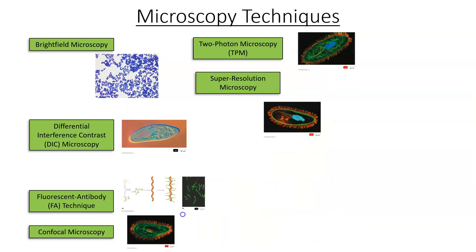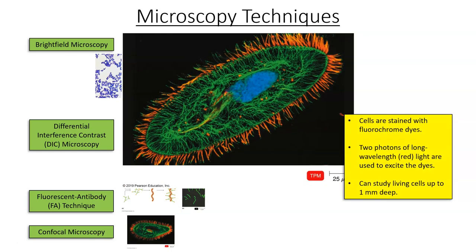Two-photon microscopy looks visually similar to confocal microscopy, and cells are still stained with fluorochrome dyes. However, instead of using one plane, it uses two photons or two planes. It uses long-wavelength red light along with fluorochromes to excite the dyes, allowing us to study living cells up to one millimeter deep. The long-wave radiation is less intense than short-wave, but it gives us a different technique to observe different types of internal structuring.